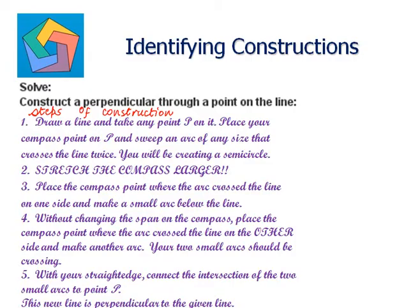Solve. Construct a perpendicular through a point on the line. Let us follow these steps of instructions mentioned here in order to construct a perpendicular through a point on the line. The first step says: draw a line and take any point P on it. So let us draw a line and take any point P on this line.